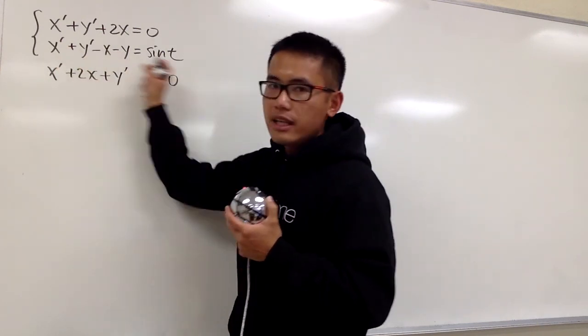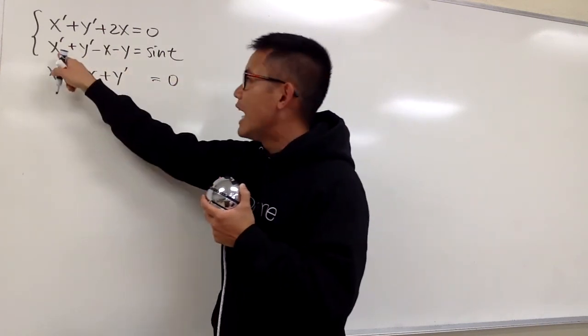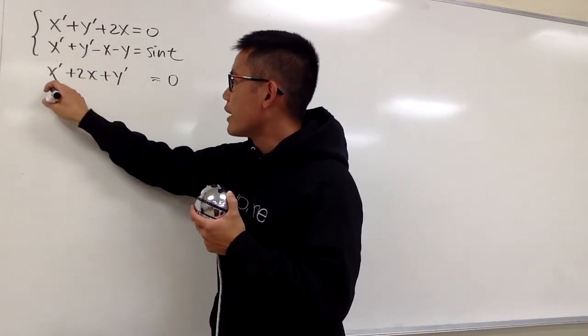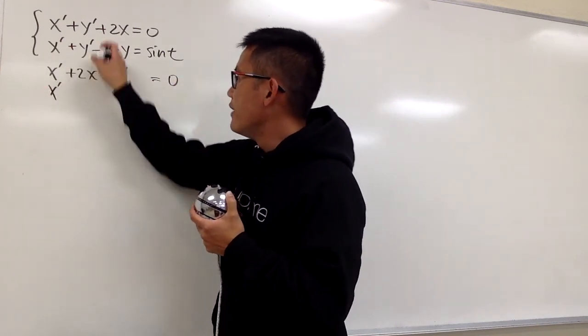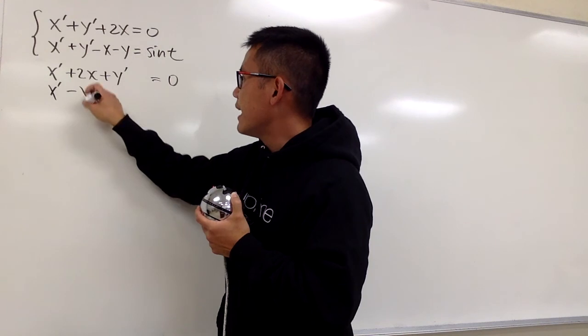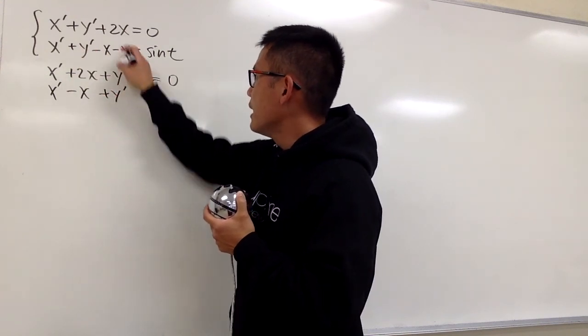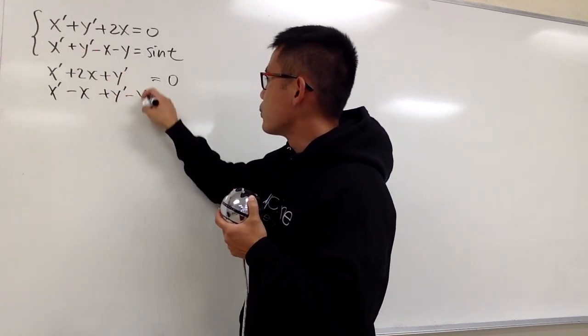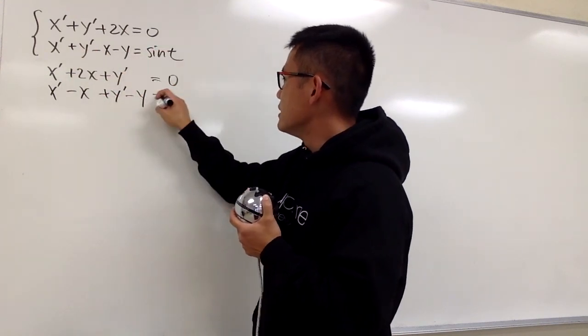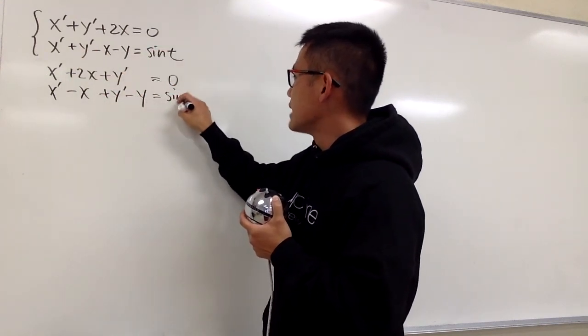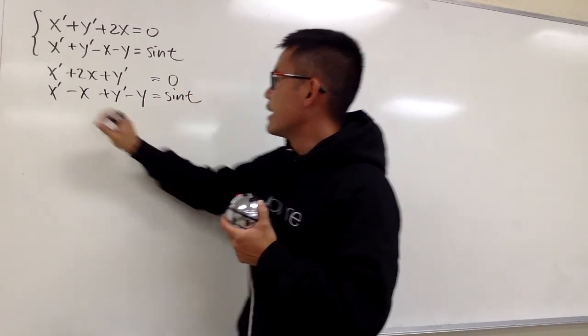And now for the second equation, we have x' right here, and then this is minus x, and then plus y', and then this is minus y, and this is equal to sin t, like this.